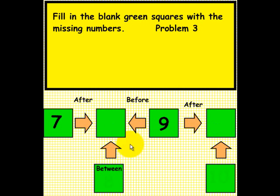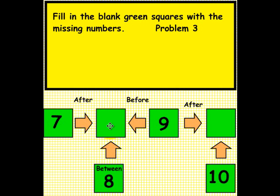The number you should have written is the number 8. 8 is between 7 and 9. The number that comes after 9 is the number 10. So we have 7, 8, 9, and 10. Please pick up an eraser and erase your answers here and here, and have another student come up to the smart board. Thank you.